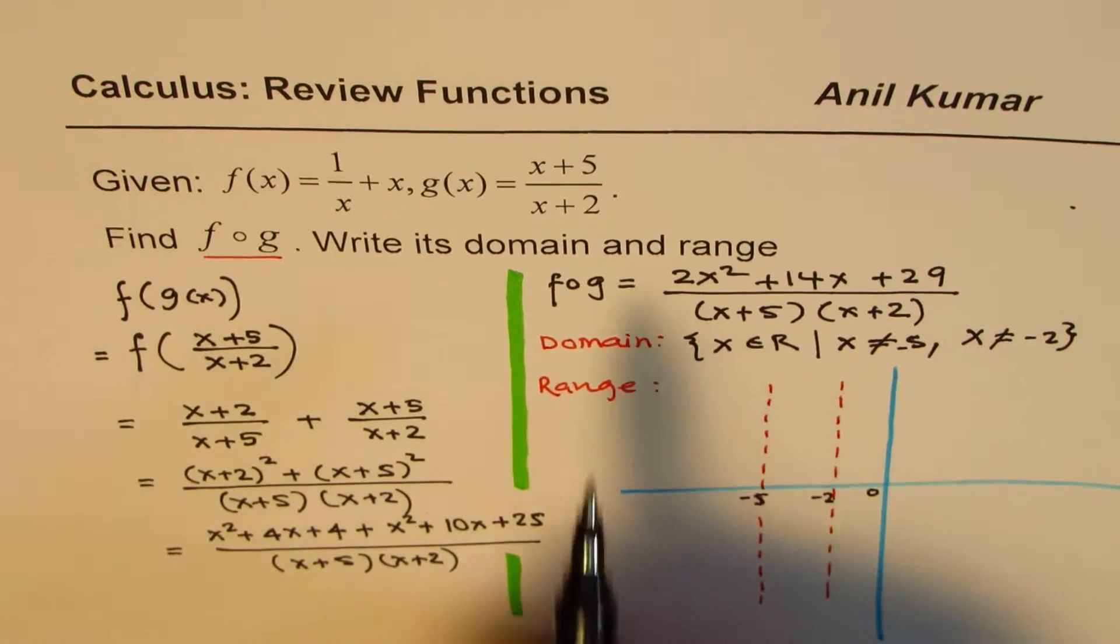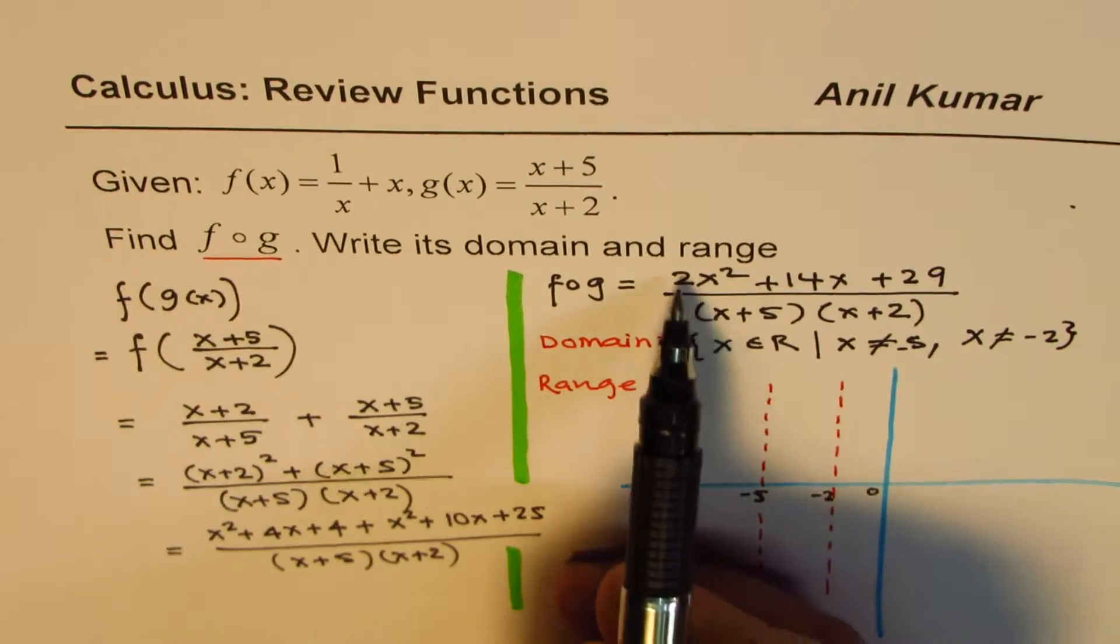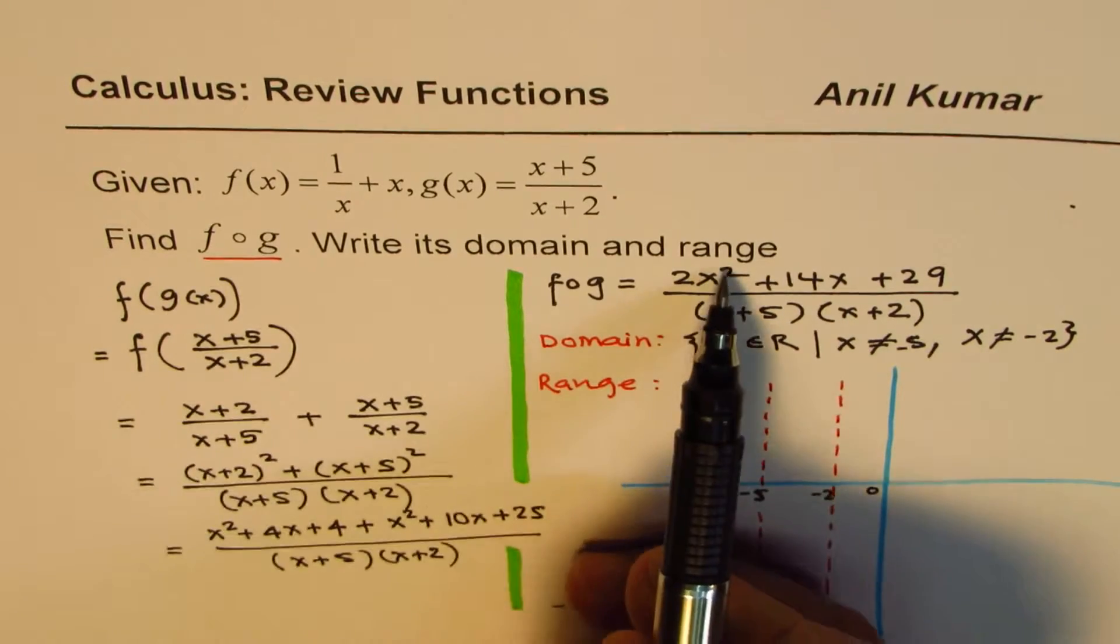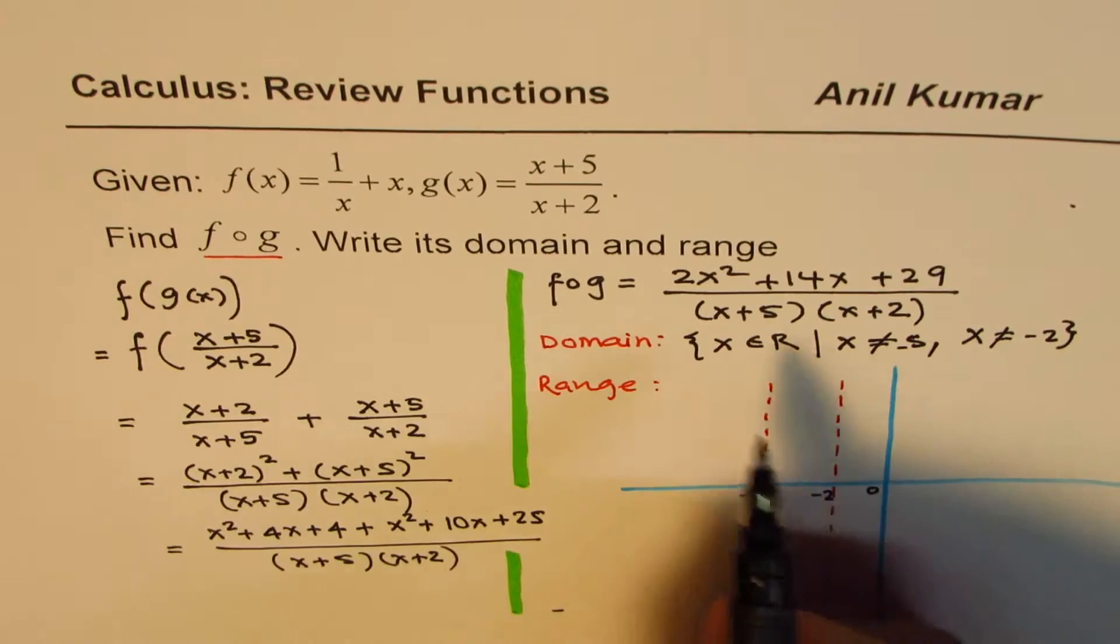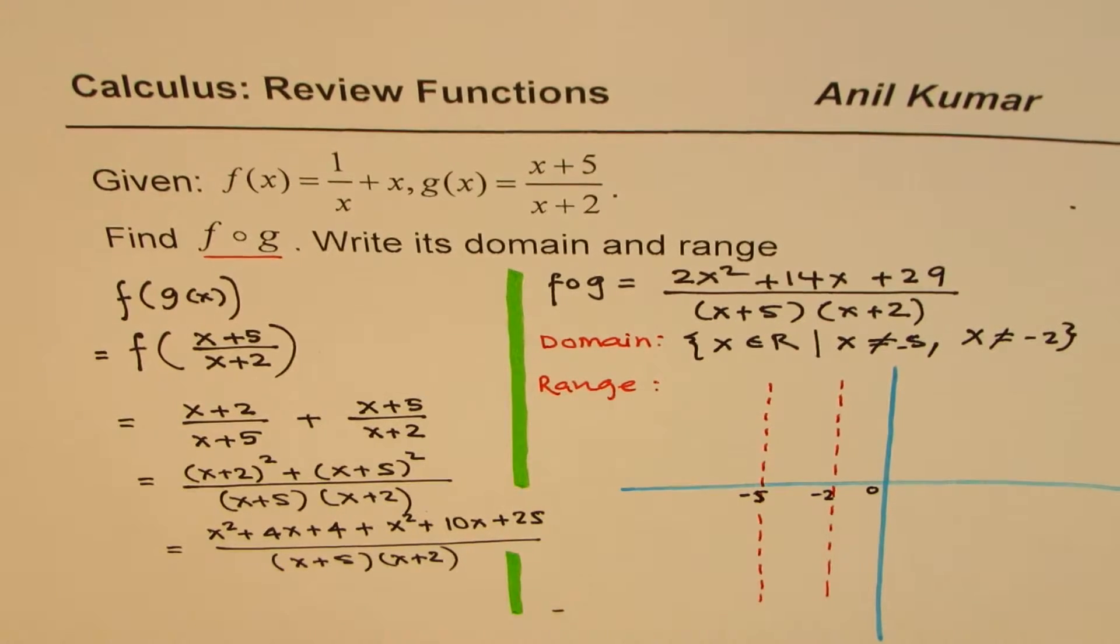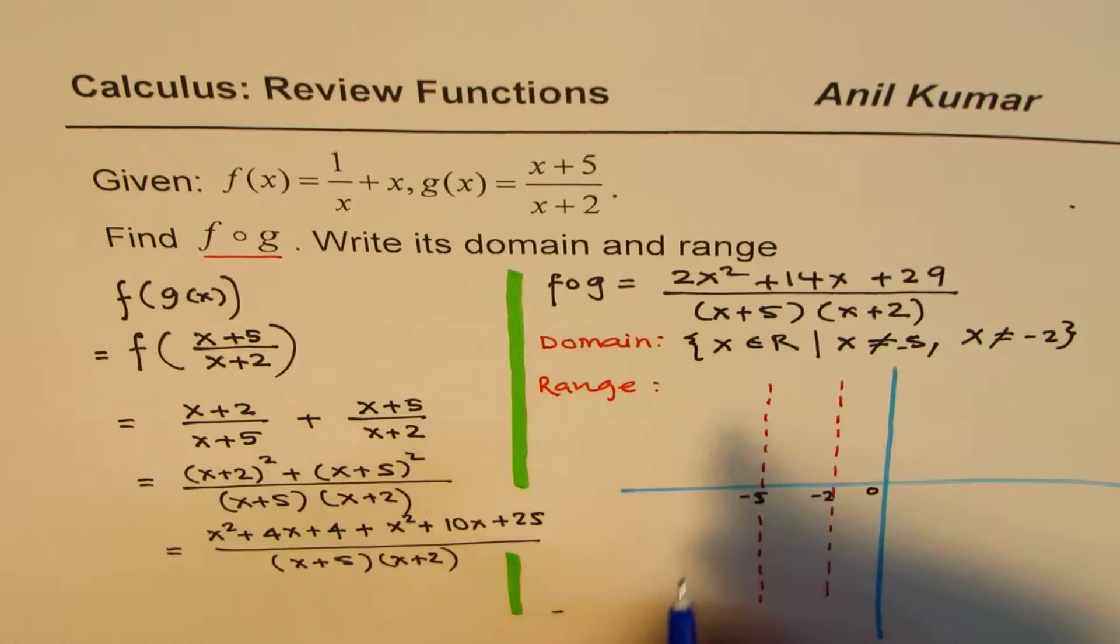You will also notice here that the degree of numerator and denominator is the same, x square and x square. In that case, we will have horizontal asymptote. Let's make a note of this. You can look into some of my videos to understand why.